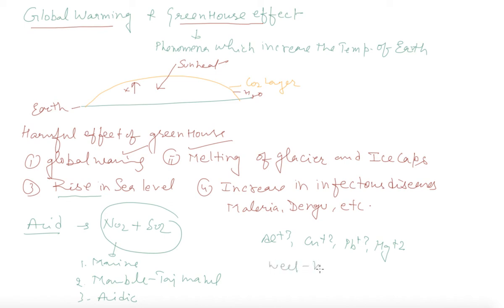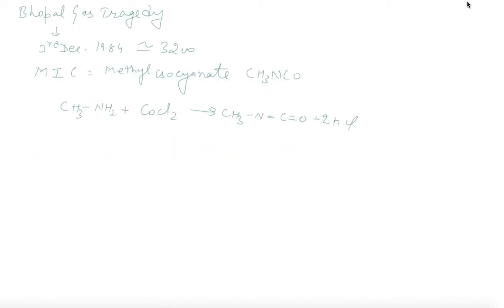Then you know very well, that is the Bhopal gas tragedy. It took place on third December 1984 and caused death to around 3200 people. It released MIC, that is methyl isocyanate gas, from the pesticides plant Union Carbide.